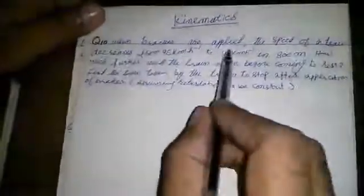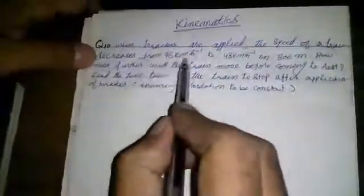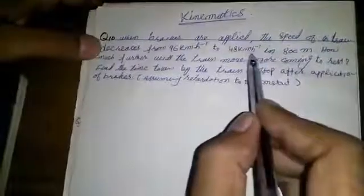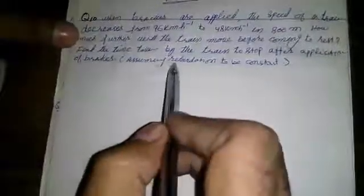Today we are solving a physics numerical. The statement is given: when brakes are applied, the speed of a train decreases from 96 km per hour to 48 km per hour in 800 meters. How much further will the train move before coming to rest? Find the time taken by the train to stop after application of brakes, assuming retardation to be constant.